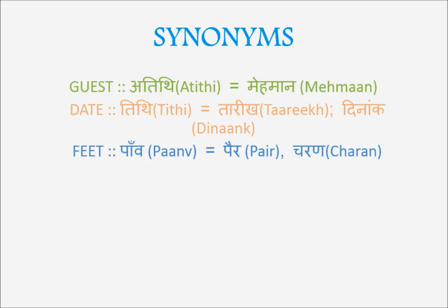So 'tithi,' 'taarikh,' and 'dianank' all mean date. Now 'paav' and 'charan' and 'per' all mean feet. Example: 'In nazuk pairon ko zameen par mat utariye' — a poetic way of saying please don't let these delicate feet touch the ground. 'Charan sparsh karna' means to touch the feet of elders.